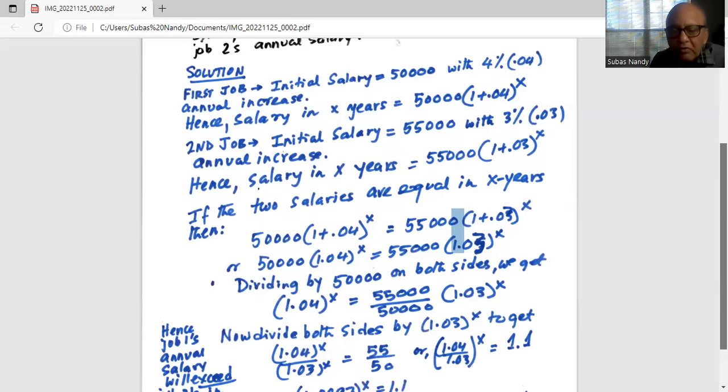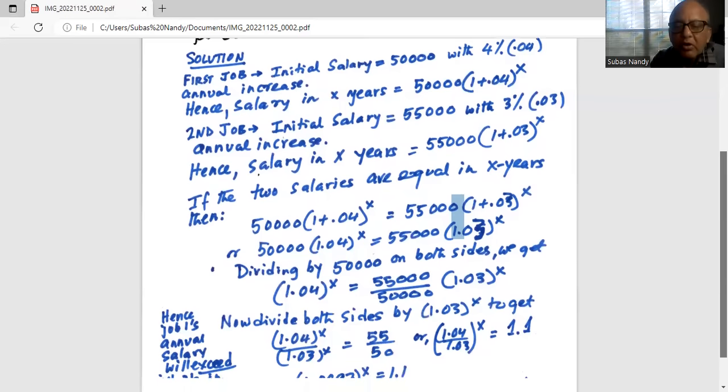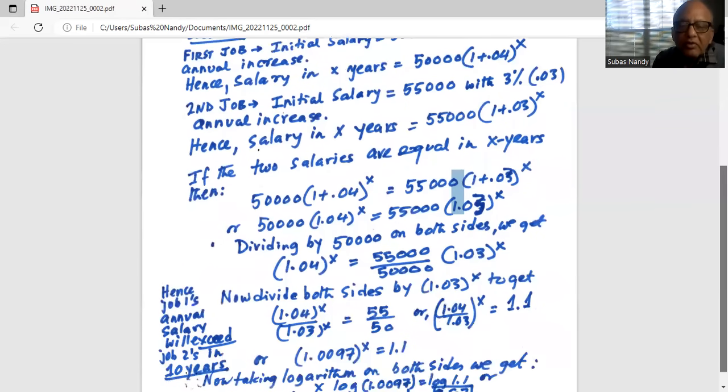Or 1.04 divided by 1.03, the whole thing raised to the power of X, equals 1.1. Now inside the parenthesis on the left hand side we have 1.0097.